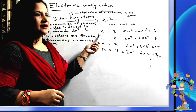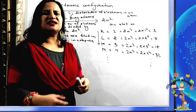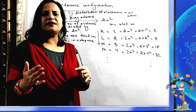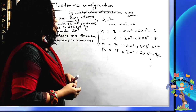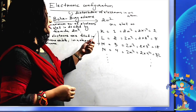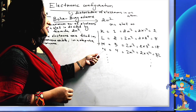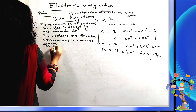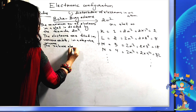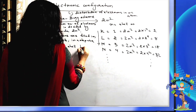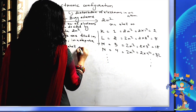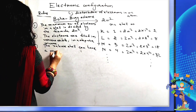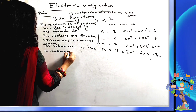Start filling from the ground state energy level, that is the K shell, which has the least energy as it is nearest to the nucleus. Fill K shell first, then L shell, then M shell and so forth. The third rule: the valence shell, also called the outermost shell, can have a maximum of eight electrons.